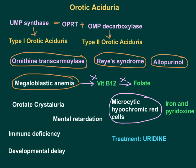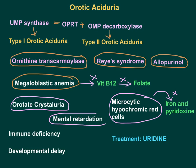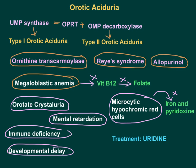Some patients with orotic aciduria will show microcytic hypochromic red cells, and this microcytic hypochromic anemia does not respond to iron and pyridoxine — normally microcytic hypochromic anemia responds to iron and pyridoxine, but here it does not. Orotic aciduria patients will also show excess orotate in urine, giving rise to crystal formation — orotate crystaluria. Patients can have mental retardation, developmental delay, and immune deficiency.